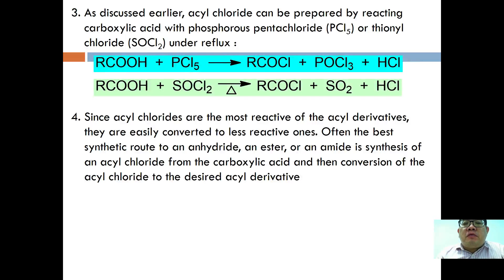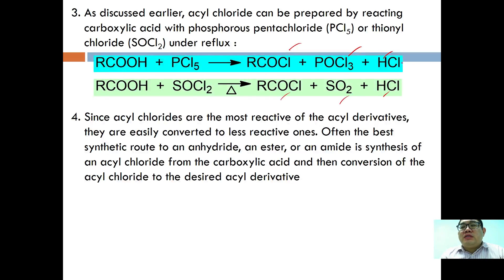Acyl chloride can be prepared by reacting carboxylic acid with phosphorus pentachloride (PCl5) or thionyl chloride under reflux. Reacting with PCl5 forms acyl chloride plus side products POCl3 and HCl. Reacting with thionyl chloride forms the same product COCl, with side products SO2 and HCl. Both reactions produce HCl, observed as a white fume. Acyl chlorides are the most reactive of the acyl derivatives.